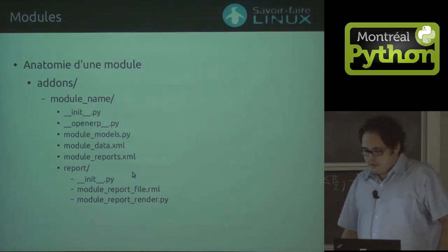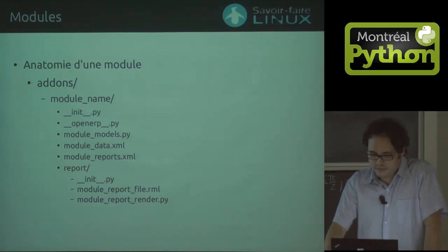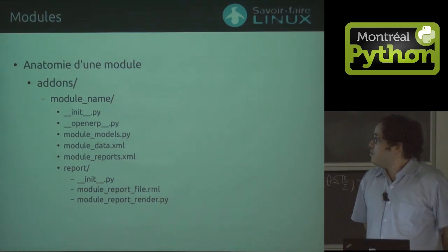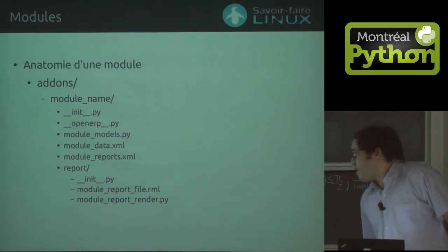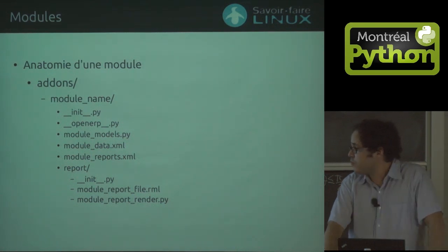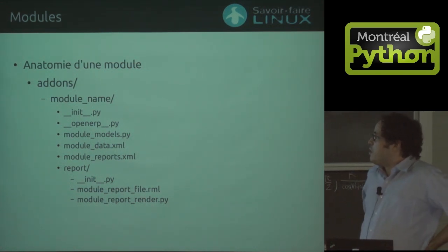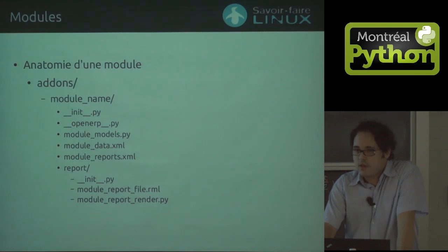This is kind of a module in OpenERP. It's not very different from a package. We usually have a folder called add-ons and a folder with the module name, then __init__.py and a very important file, openerp.py. That's where all the information goes that OpenERP needs to know to install the module. And there go the files with functionalities - where we define models, where we define views, where we define reports, and all the standard business type of software things.